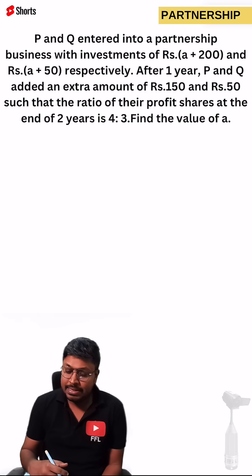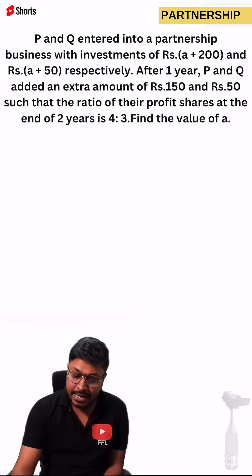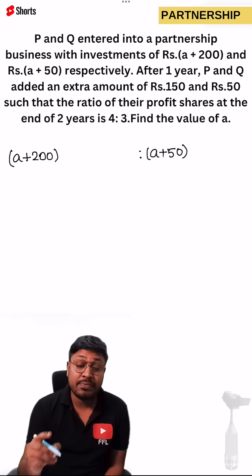So totally there are two persons in a business and their initial investment was A plus 200 for the first person and A plus 50 for the second person. And this is for the first year.